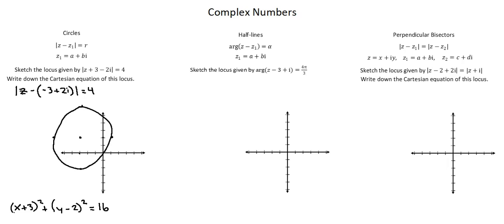Next, half lines. The general equation, argument of z minus z1 equals alpha, z1 is a plus bi. Our requirement, sketch the locus given by argument z minus 3 plus i equals 4 pi over 3.